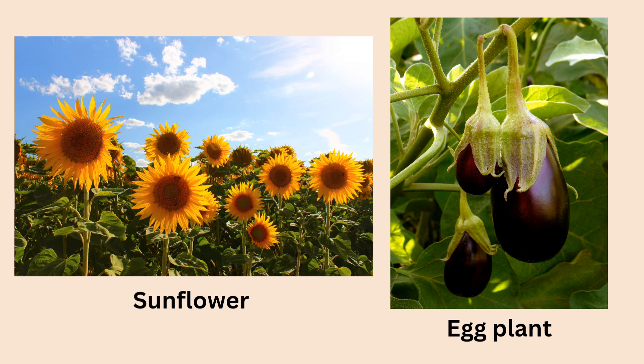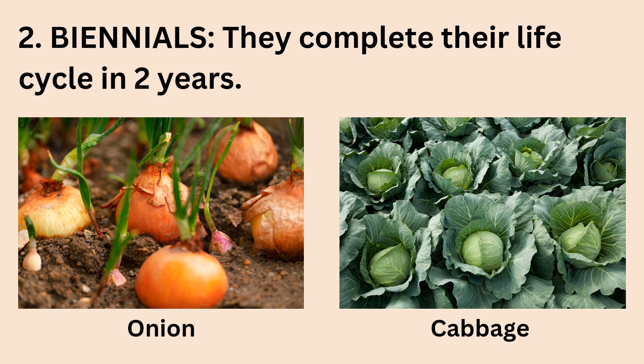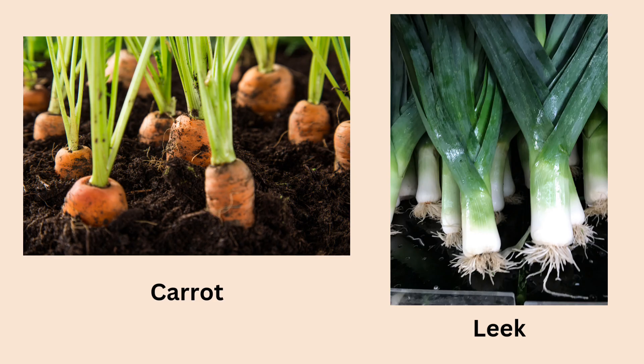The second class or group of plants are biennials. These complete their life cycle in two years. In the first year, they produce roots, stems and leaves. Then in the second year, they produce flowers, fruits, seeds and then die. Typical examples of plants in this group are onion, cabbage, carrot, leek and some others.